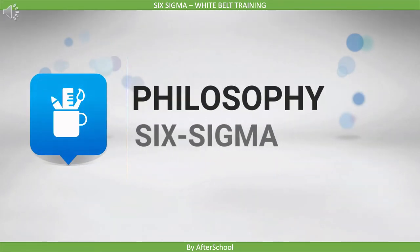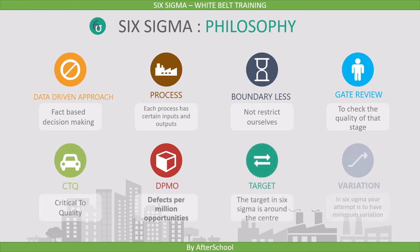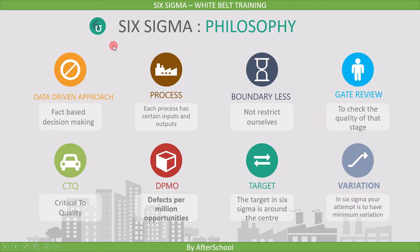In this lecture, we will cover Six Sigma's philosophy in detail. Let us first see what structure does the philosophy hold on which Six Sigma stands. Six Sigma stands on these following philosophies: data-driven approach, process, boundaryless, gate review, CTQ (critical to quality), DPMO (defects per million opportunities), target, and variation. Now I will explain each of these terms in detail.